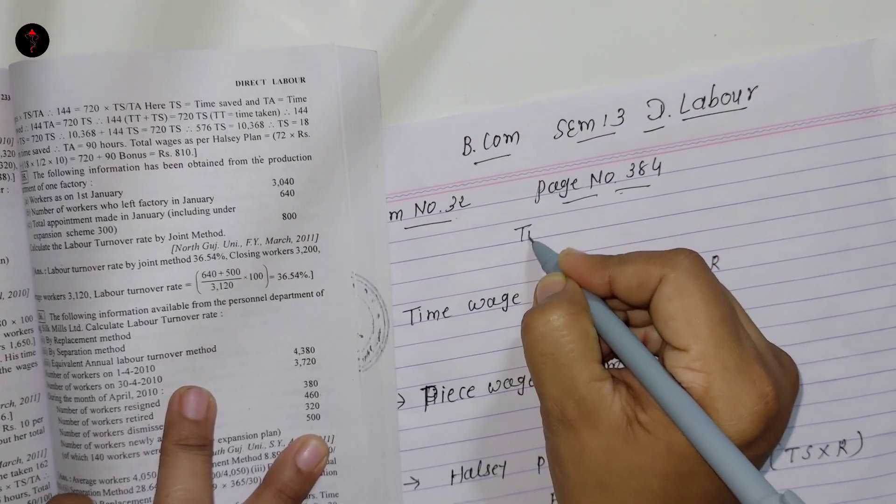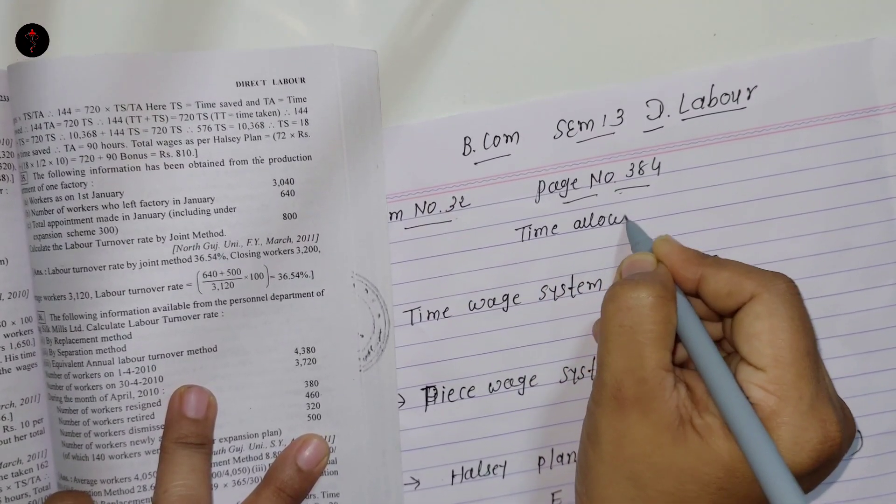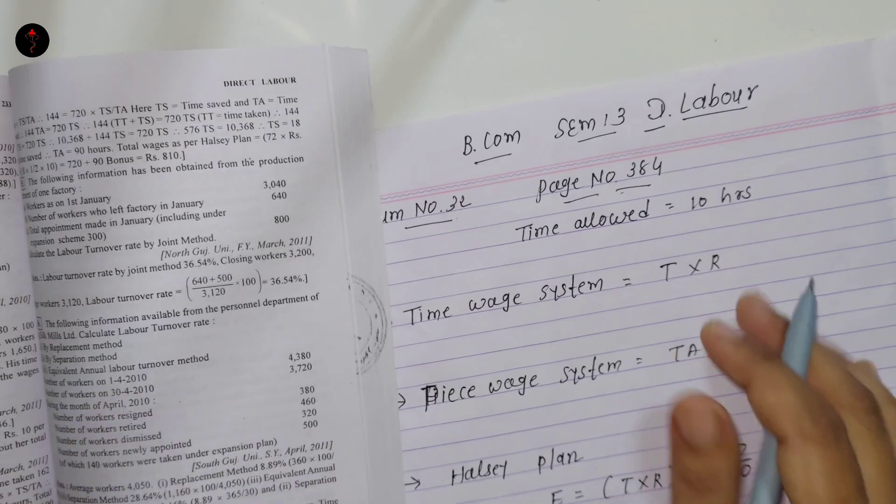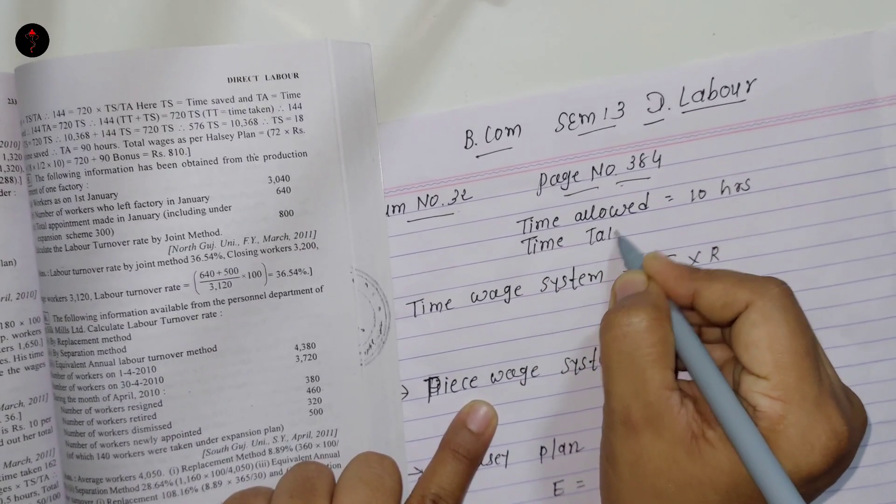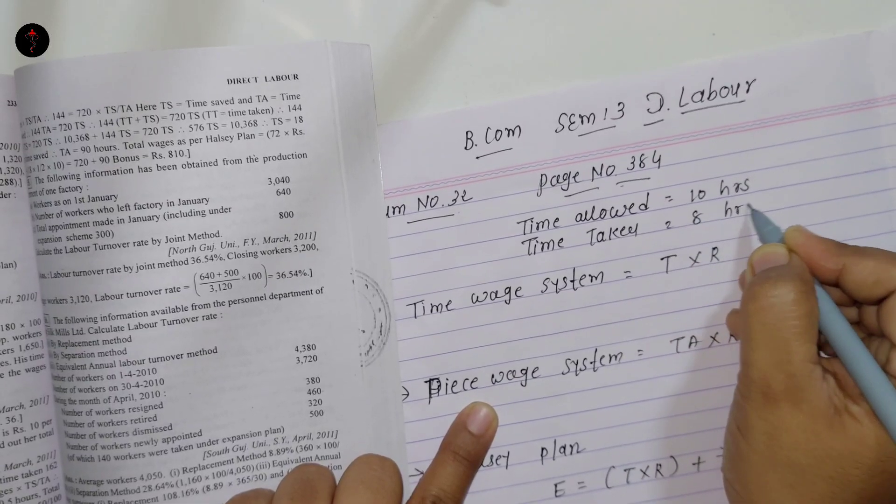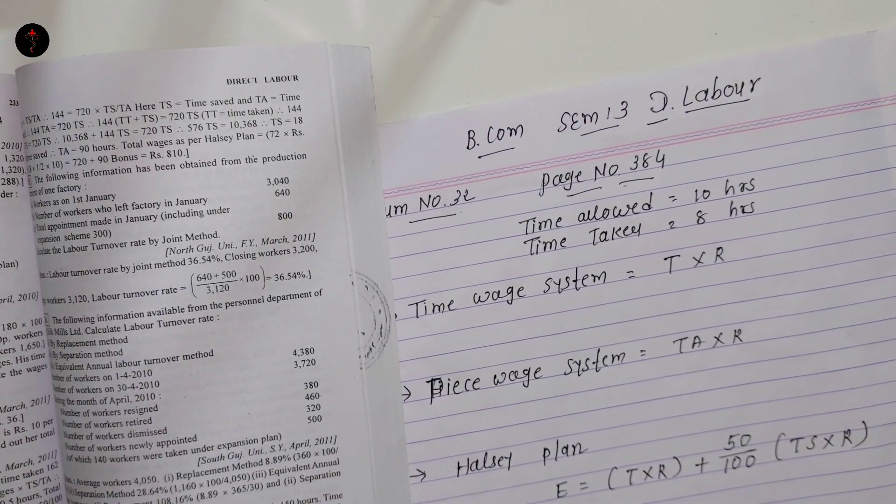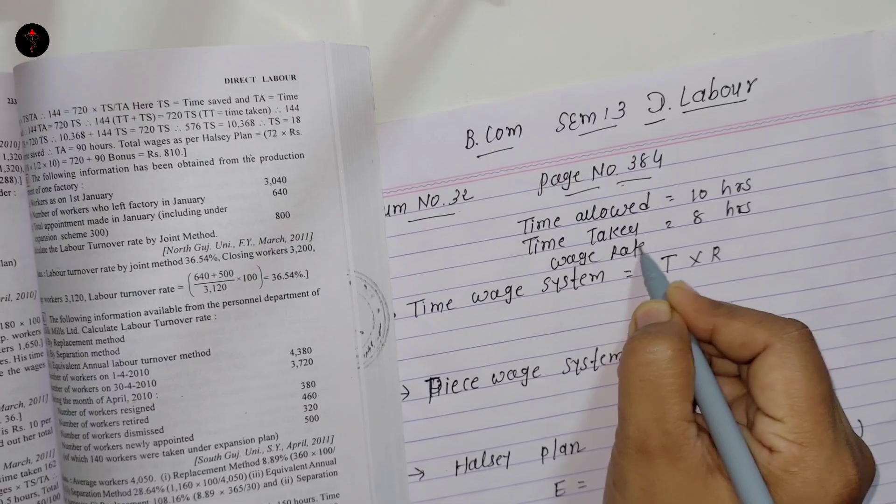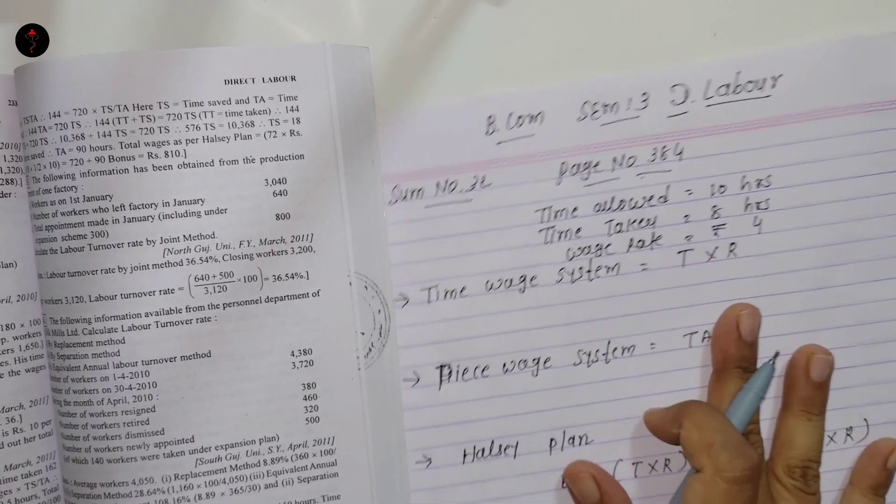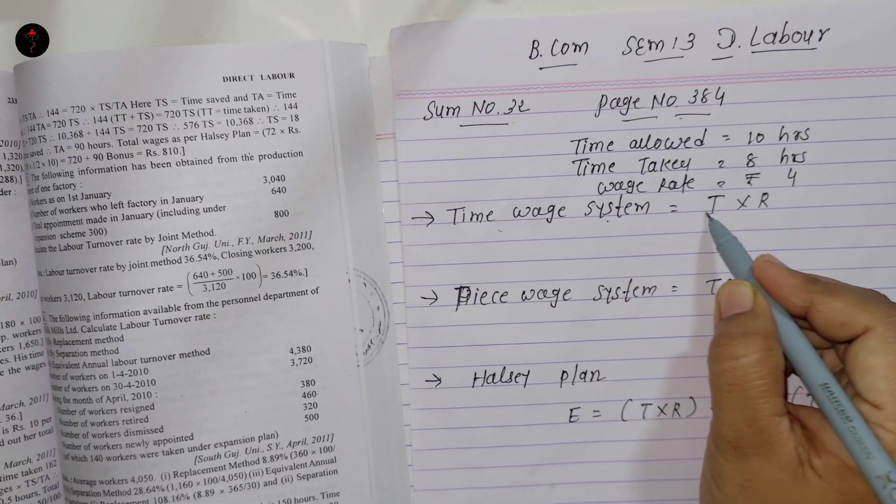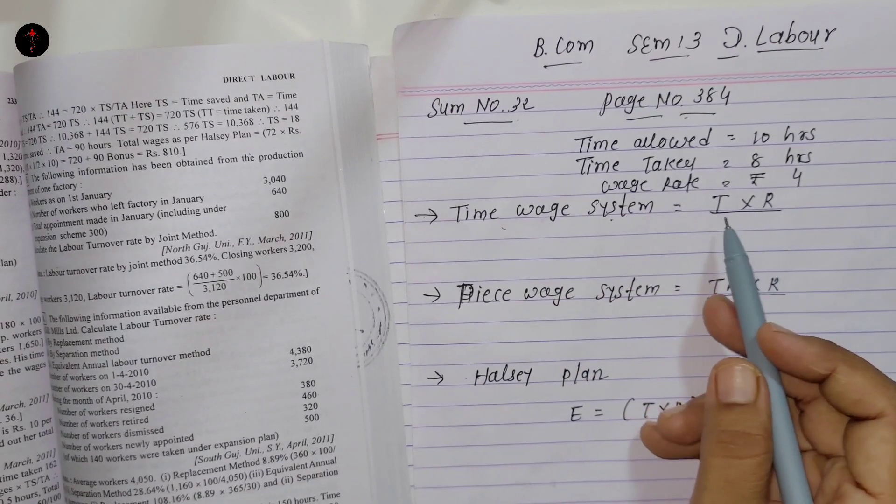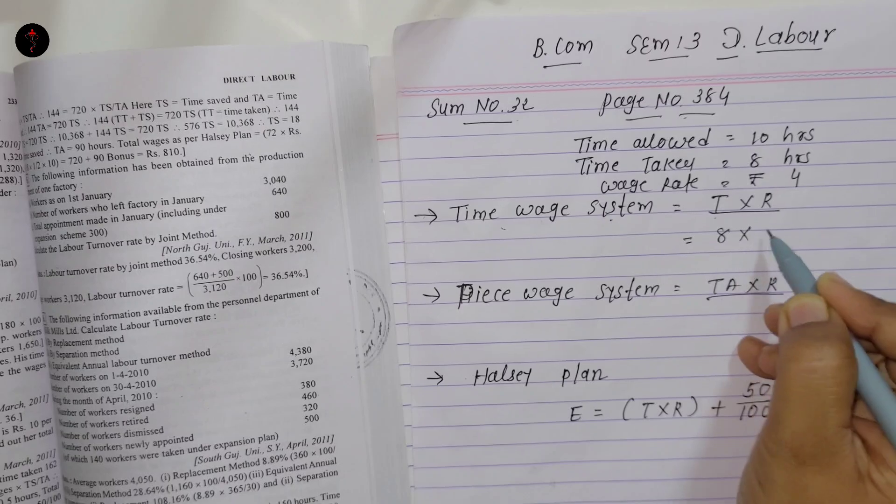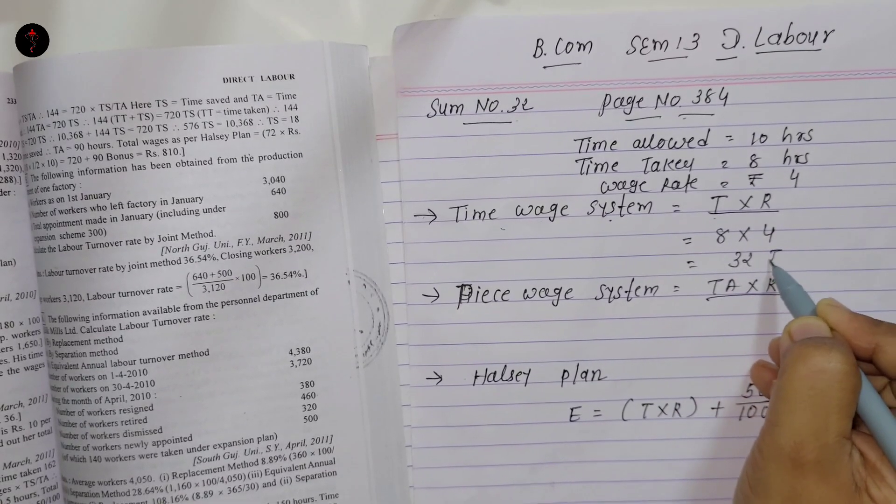Time allowed is 10 hours. Time taken is 8 hours. And the wage rate is Rs. 4 per hour. For time wage system, the formula is T into R, that is time taken multiplied by rate. So, time taken is 8 hours, rate is Rs. 4. Our answer is Rs. 32. Very simple.